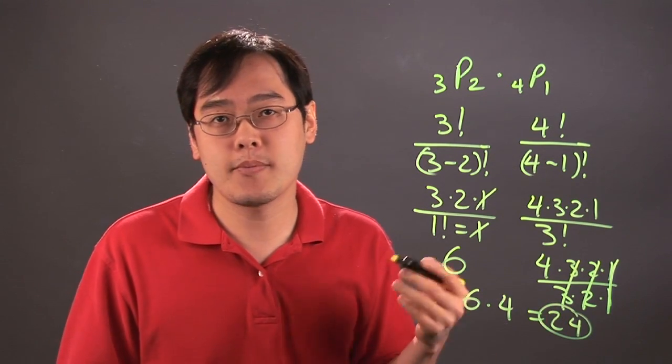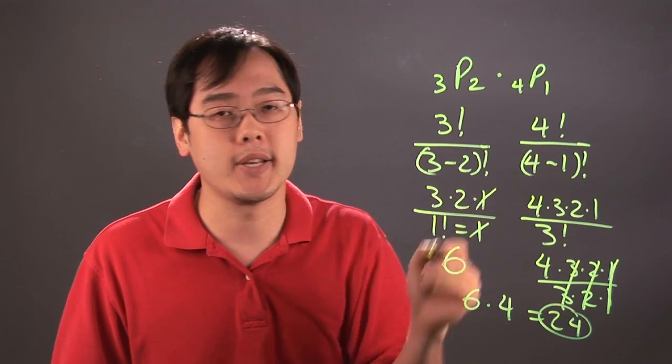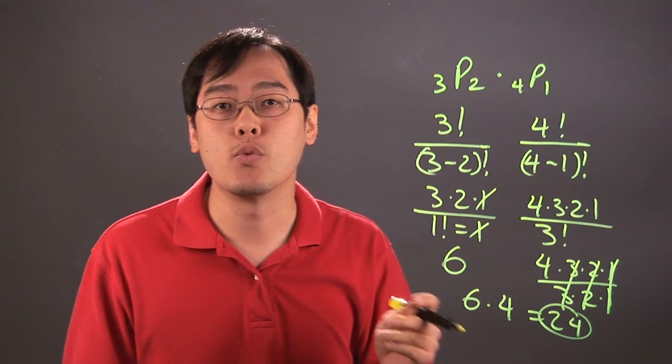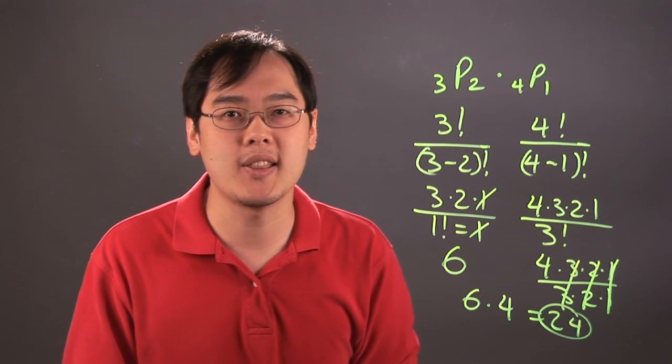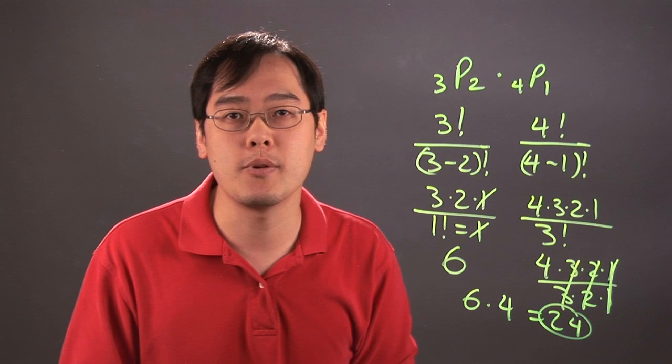So when you're multiplying permutations, you have to break down each permutation into their respective factorial fraction form, reduce each permutation, and then multiply at the very end. So I'm Jimmy Chang and that's a brief demonstration on how to multiply permutations.